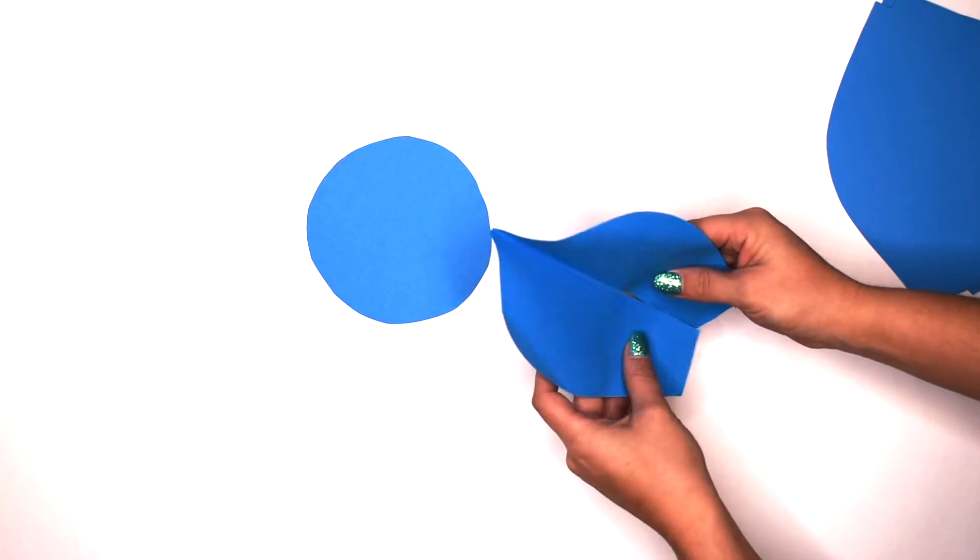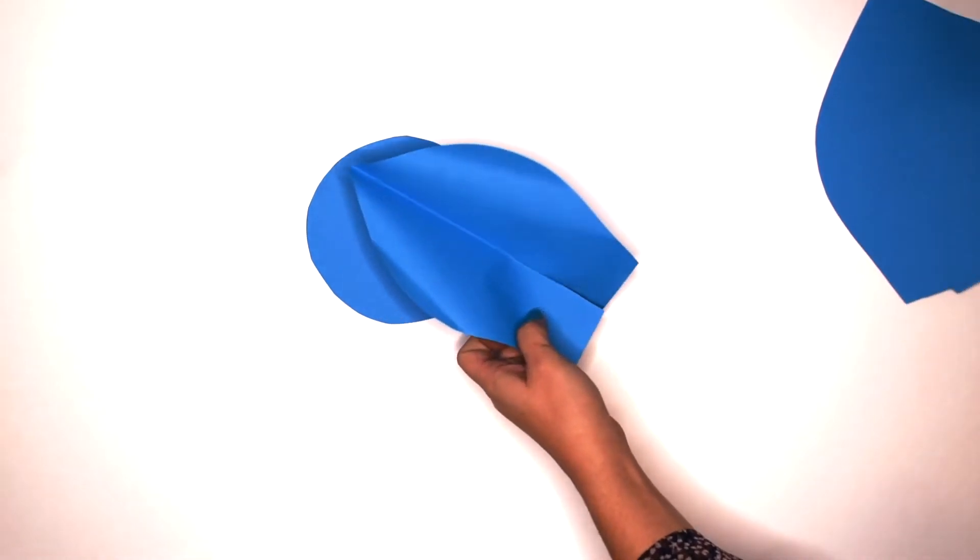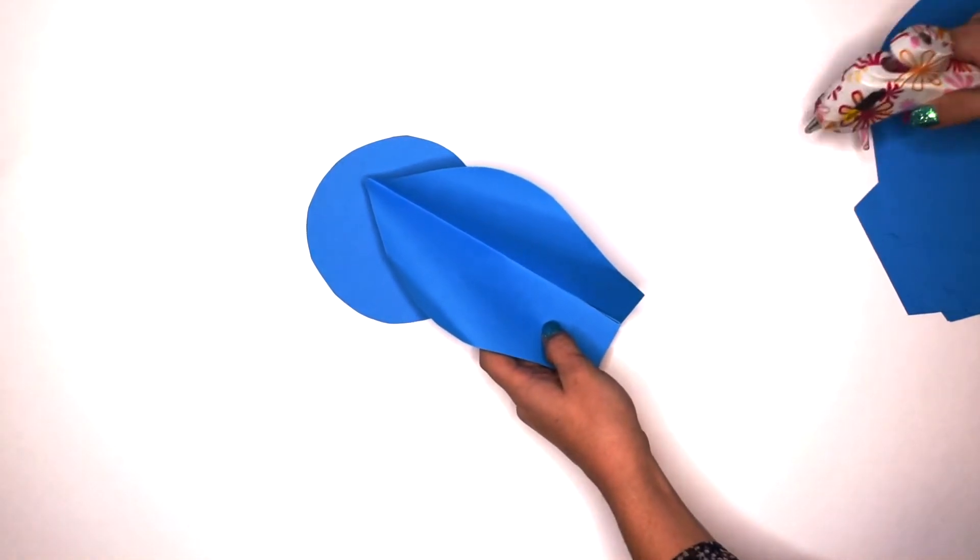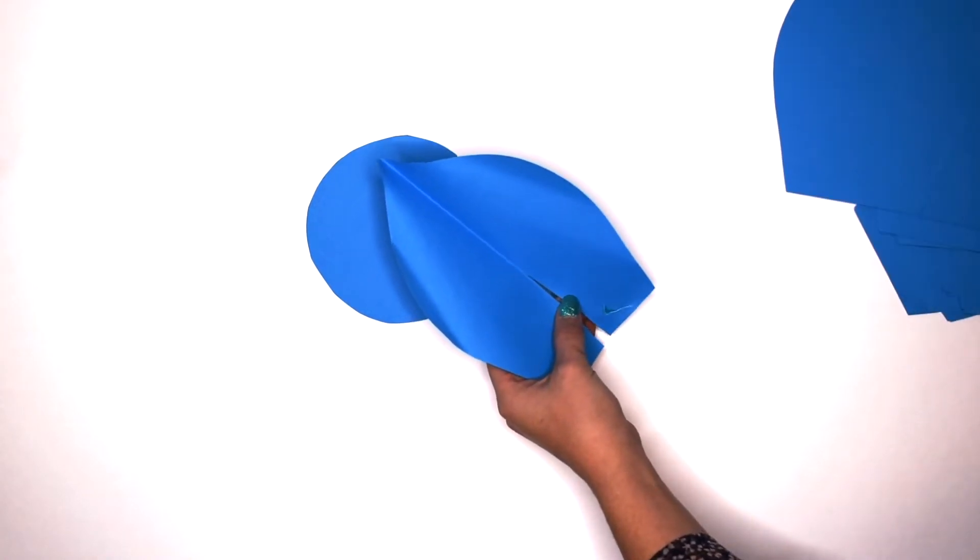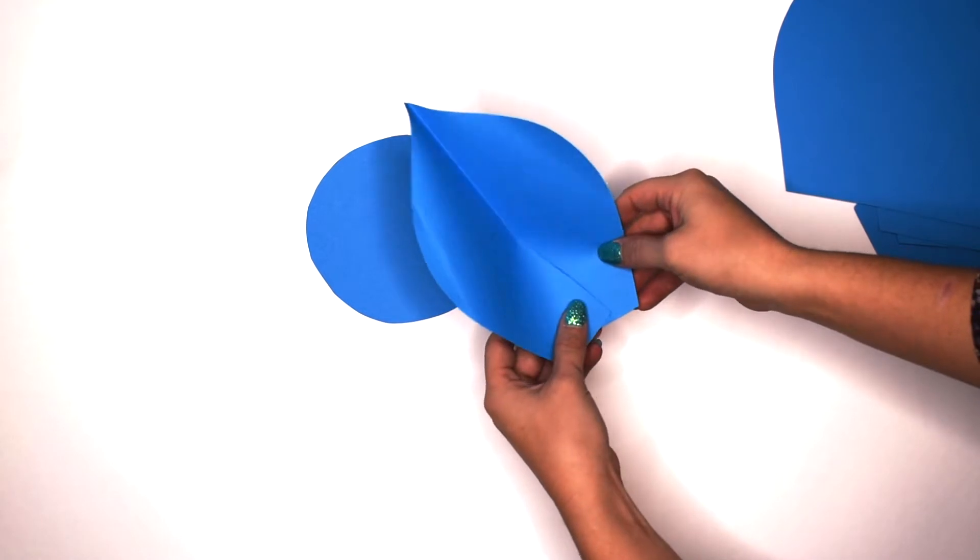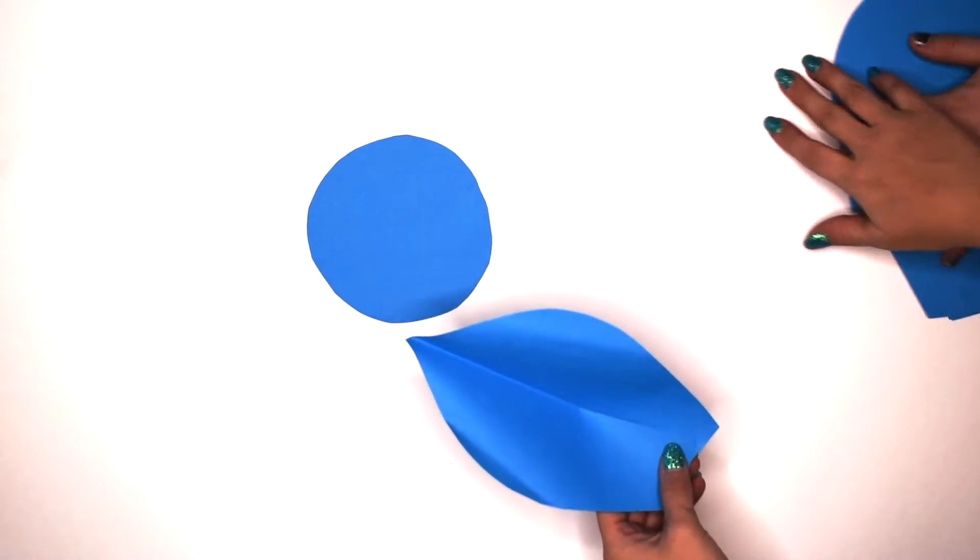Now that we have beautifully shaped petals it is time for us to assemble them. On one side of where we cut that slit we're going to add a glue dot. Then you're going to take the other side of the petal at the bottom and pull it over that glue dot and hold it down and press.